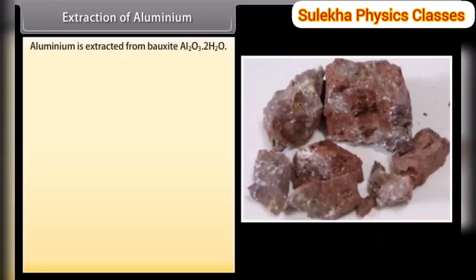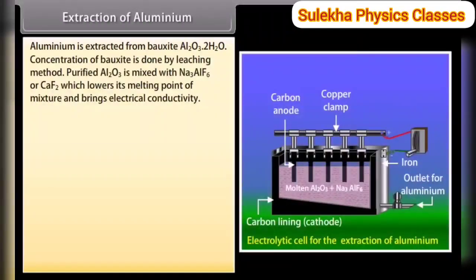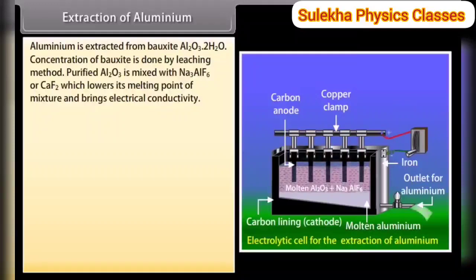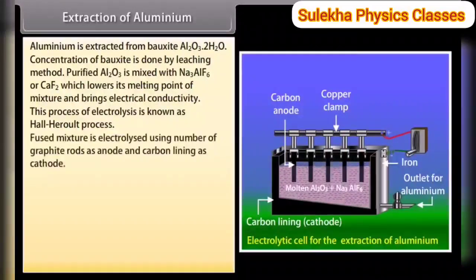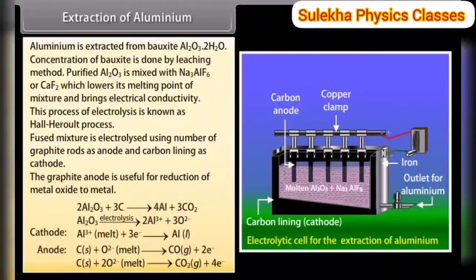Extraction of aluminium. Aluminium is extracted from bauxite (Al₂O₃·2H₂O). Concentration of bauxite is done by the leaching method. Purified Al₂O₃ is mixed with Na₃AlF₆ or CaF₂, which lowers the melting point of the mixture and improves electrical conductivity. This process of electrolysis is known as the Hall-Héroult process. The fused mixture is electrolyzed using graphite rods as anode and carbon lining as cathode.